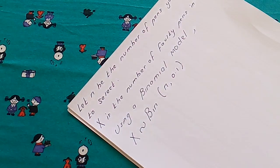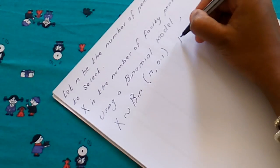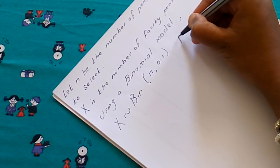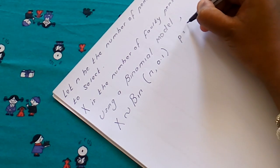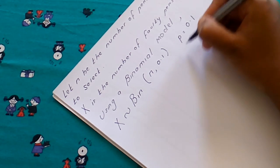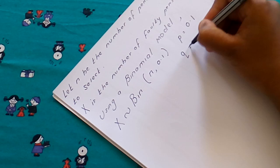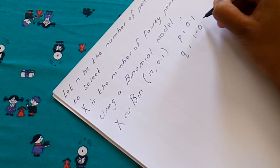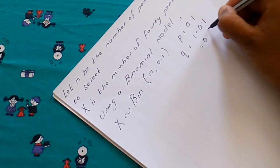Now once we have defined our distribution we can find q. So we have p is 0.1 therefore q is simply 1 minus 0.1 which is 0.9.